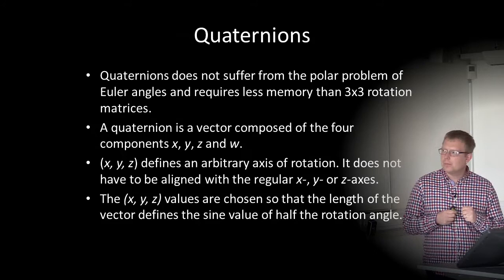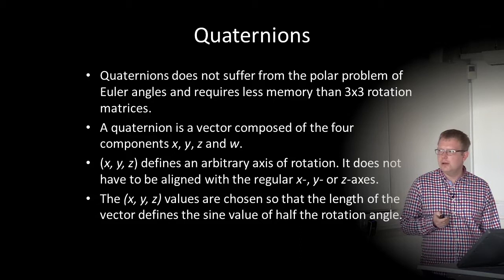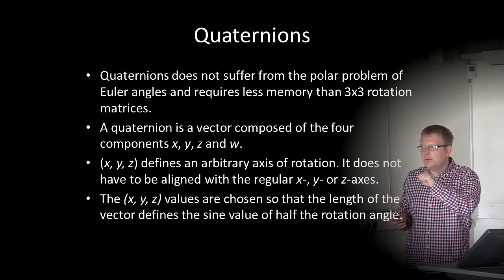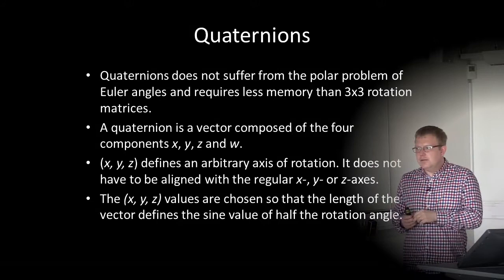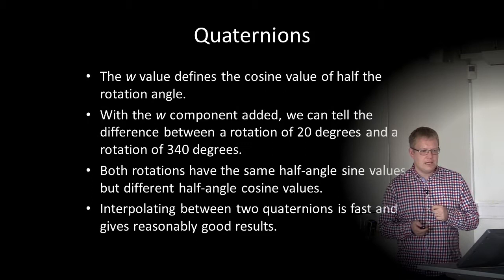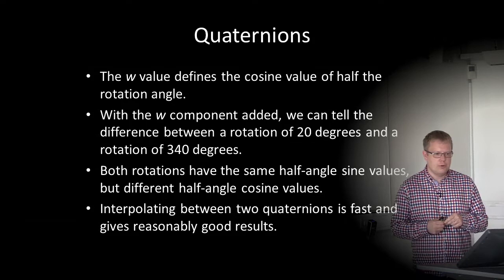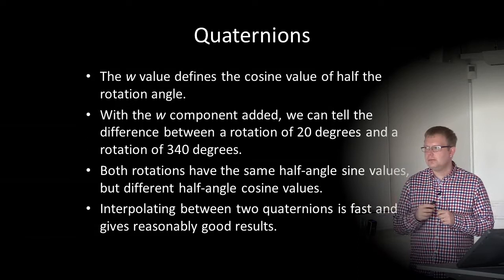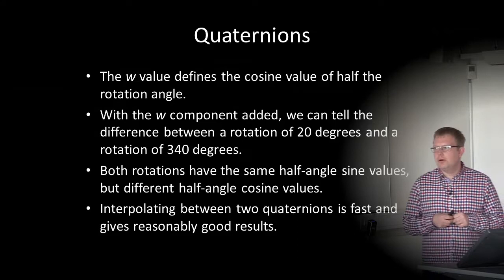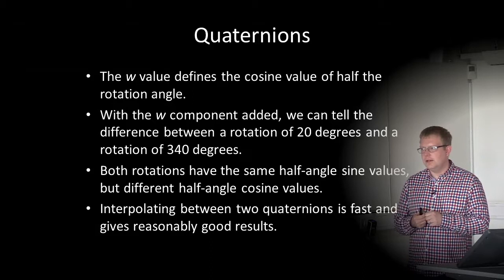A quaternion is a vector composed of four components: x, y, z, and w. X, y, and z define an arbitrary axis of rotation — the axis we rotate around — and it does not have to be aligned with the regular x, y, or z axis. The x, y, and z values are chosen so that the length of the vector defines the sine value of half the rotation angle. The w value defines the cosine value of half the rotation angle. With the w component, we can tell the difference between a rotation of 20 degrees and 340 degrees, which end up at the same place. Both have the same half-angle sine values but different half-angle cosine values.